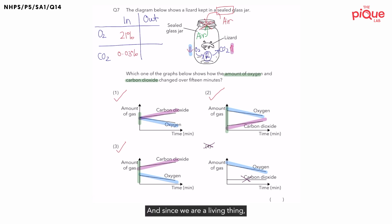And since we are a living thing, the lizard is also a living thing. We must take in oxygen to carry out respiration. Therefore, in the air that we breathe out, will it contain more or less oxygen? It will contain less oxygen. But lesser by how many percent? Lesser by about 4%. Therefore, in the air we breathe out, it will contain about 17% of oxygen. And during respiration, we will also produce about 4% of carbon dioxide. Therefore, in the air that we breathe out, it contains about 4% of carbon dioxide.